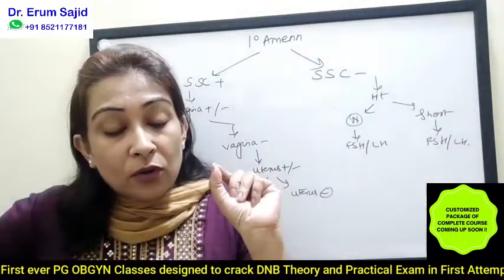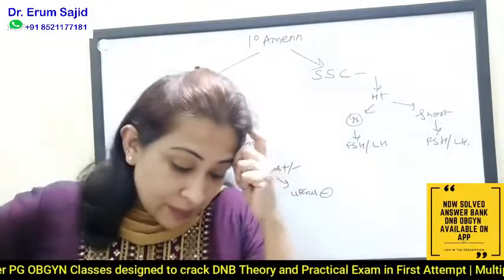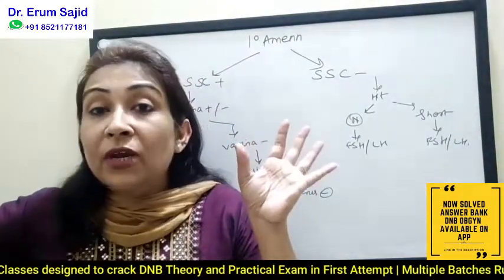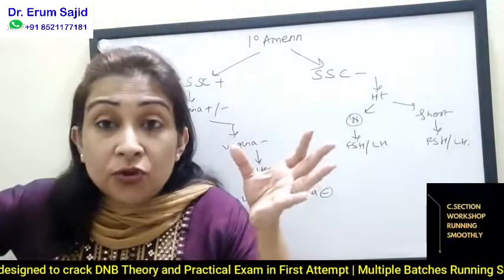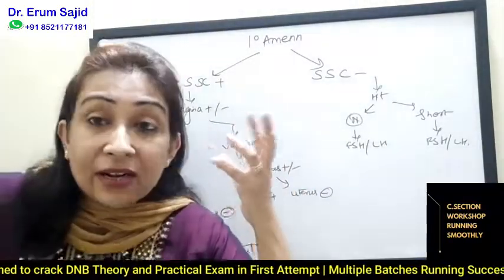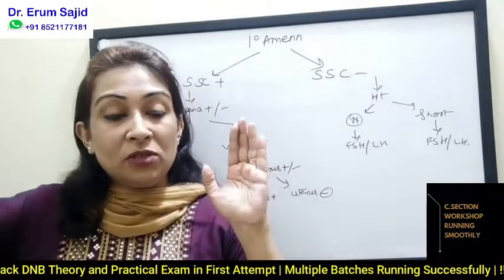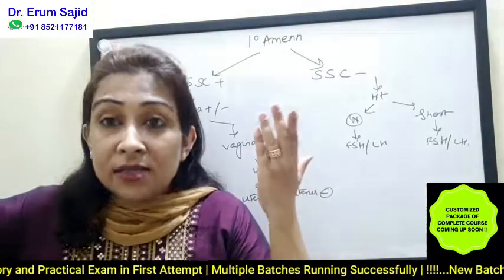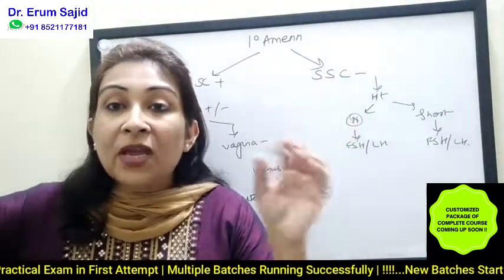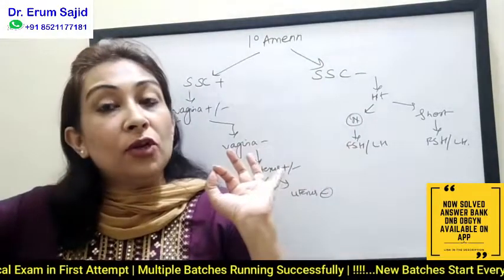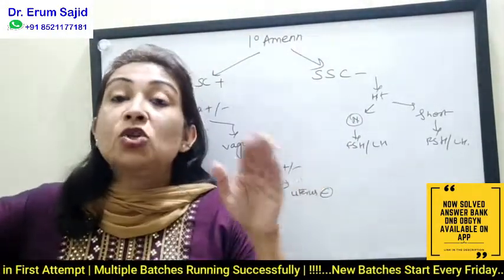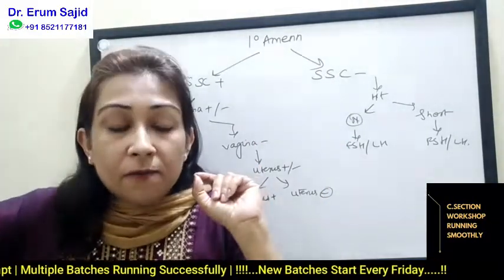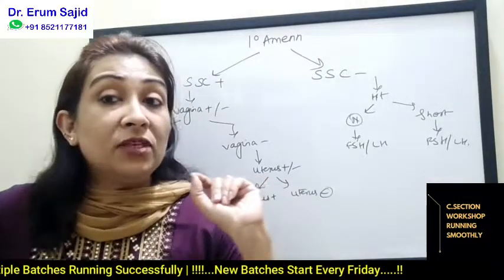The hypothalamus releases gonadotropin-releasing hormones, which stimulate the pituitary to release FSH and LH. These in turn stimulate the ovary to release estrogen and progesterone. Estrogen primes the uterus; progesterone leads to the secretory phase. When both hormones decrease, menstruation takes place — provided there is a patent outflow system with no obstruction. That is the fundamental of the menstrual cycle which everybody knows. So where are we falling short in understanding primary amenorrhea? Let's now begin with the factual and conceptual part of this topic.